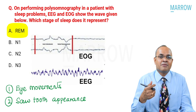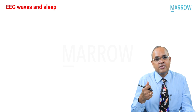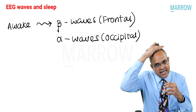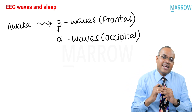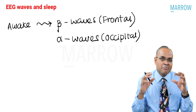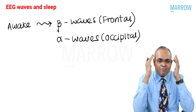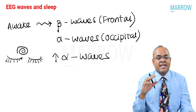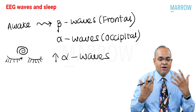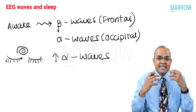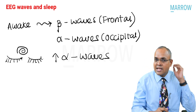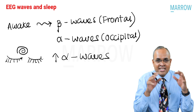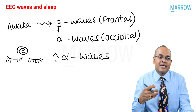Some important points related to EEG and sleep which can be tested in exams: when somebody is awake, you typically see beta waves in the frontal and central areas, whereas in the occipital area you can have alpha waves. The moment somebody closes their eyes and starts focusing, meditating, chanting, or doing pranayama, they have a lot of alpha wave activity throughout the brain — the alpha waves spread from the occipital area over the rest of the brain.